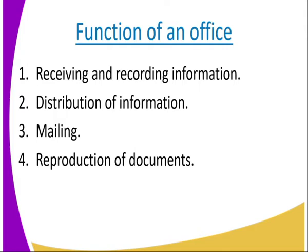There is the passing of information from the CEO down to the workers — that is vertical communication, from upward downwards. Then you also have communication from the workers all the way to the CEO, which is still vertical but upward. All this information passes through the office. Then we have mailing, which is sending information from one person to another. All this work is done by the secretary found in the office.